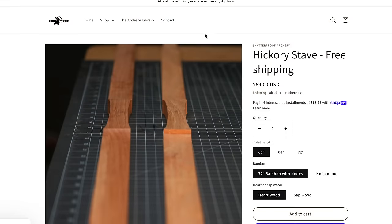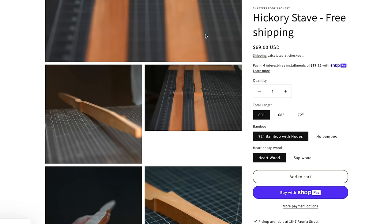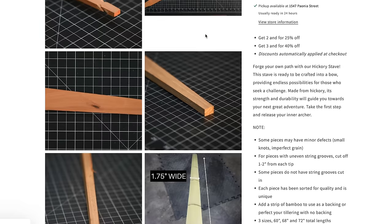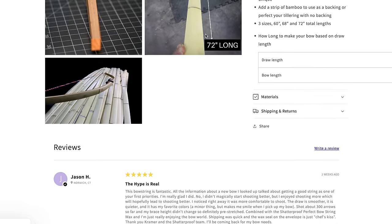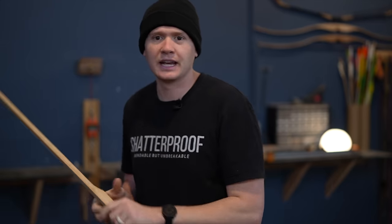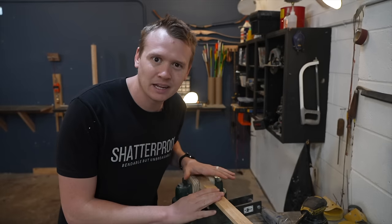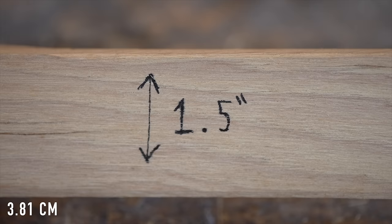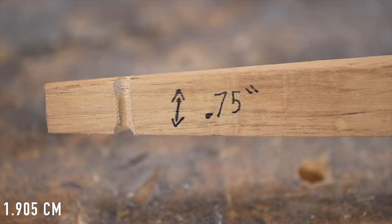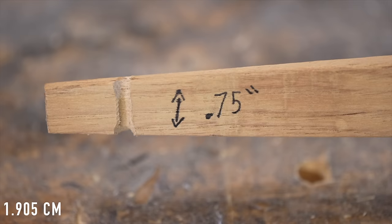As a matter of fact, we actually sell these now at Shatterproof Archery, different hickory staves, if you're interested in building your own hickory bow. This specific stave is a 68 inch hickory stave. It's already pre-tapered and pre-floor tillered. If you have a hickory board that's not pre-tapered, the taper is pretty simple. One and a half inches at the handle, and taper that to the tip. That's three quarter of an inch.